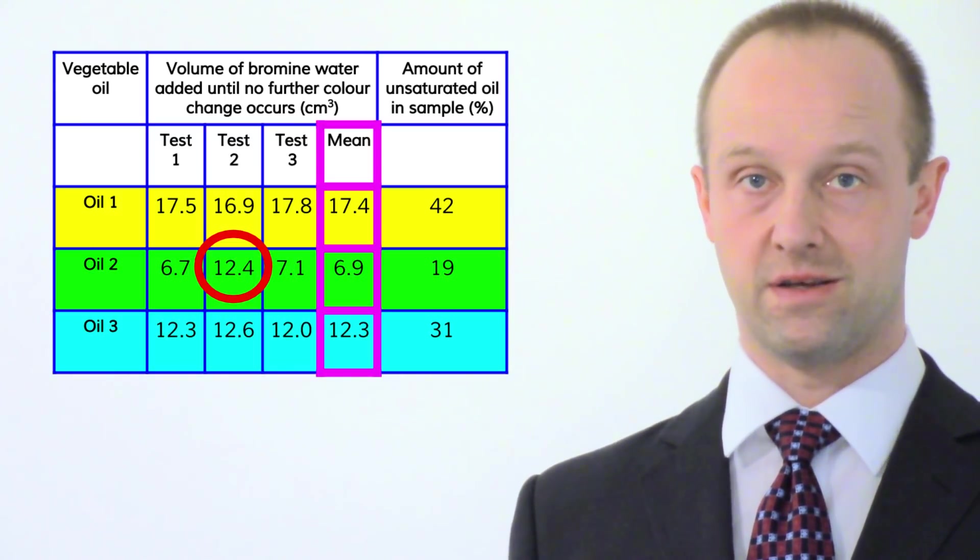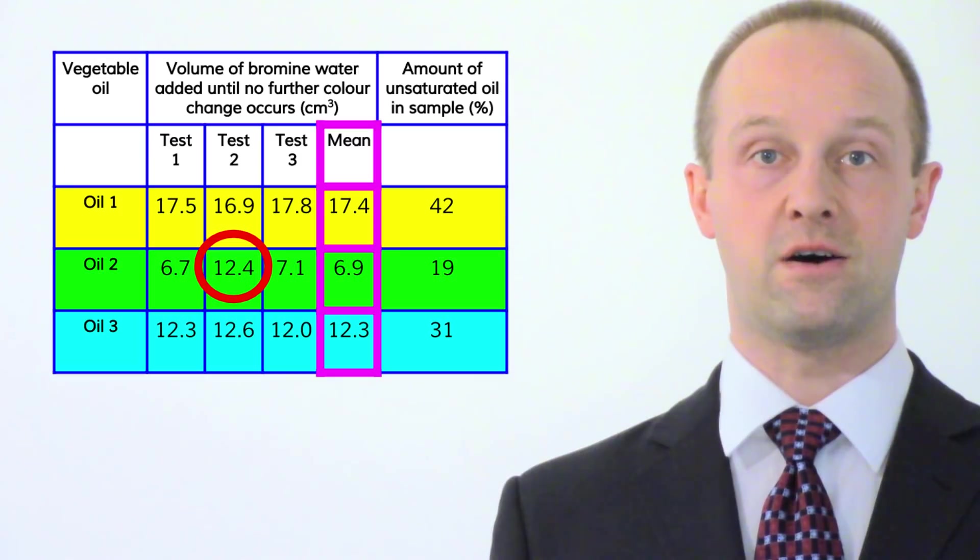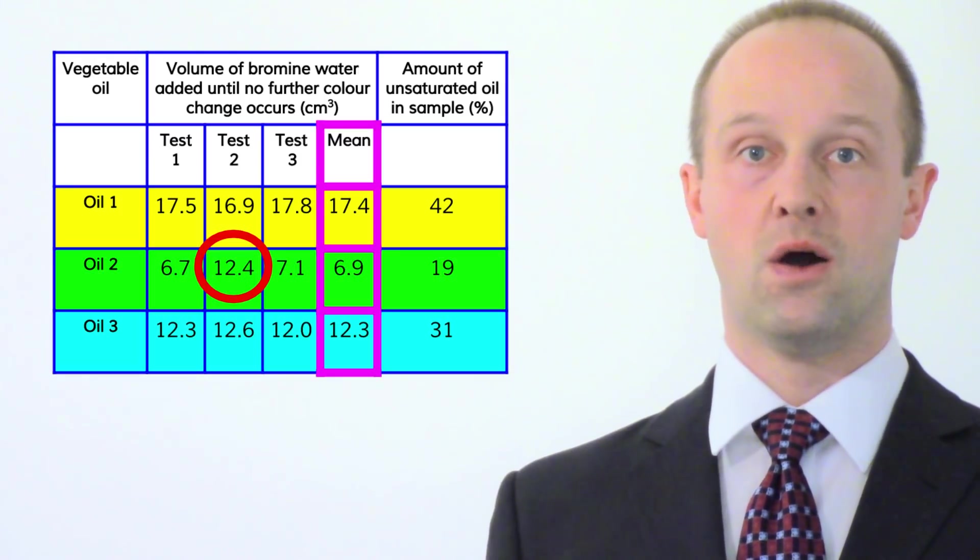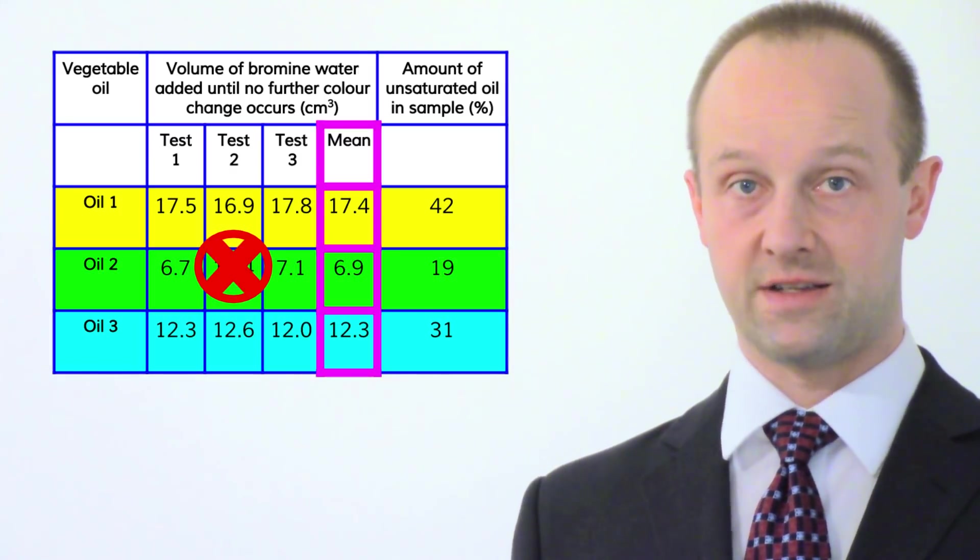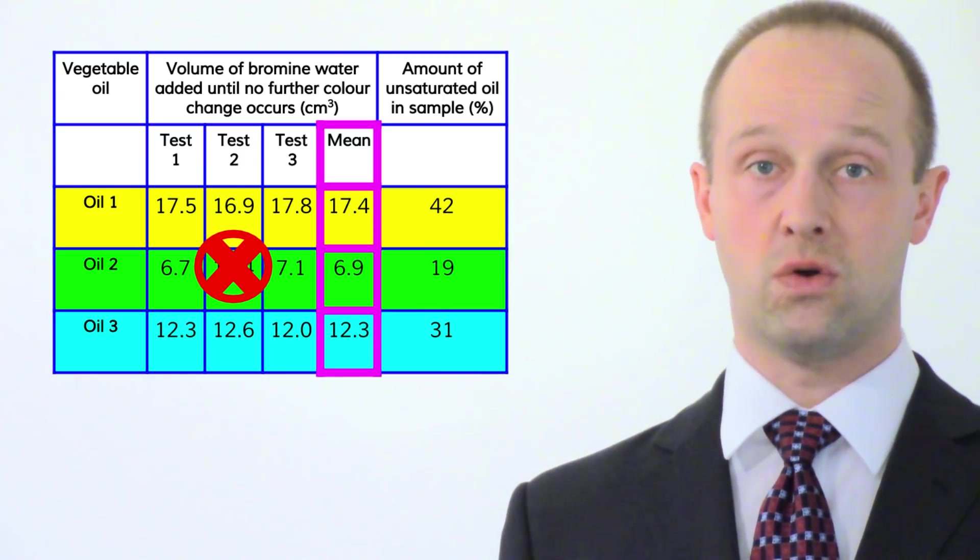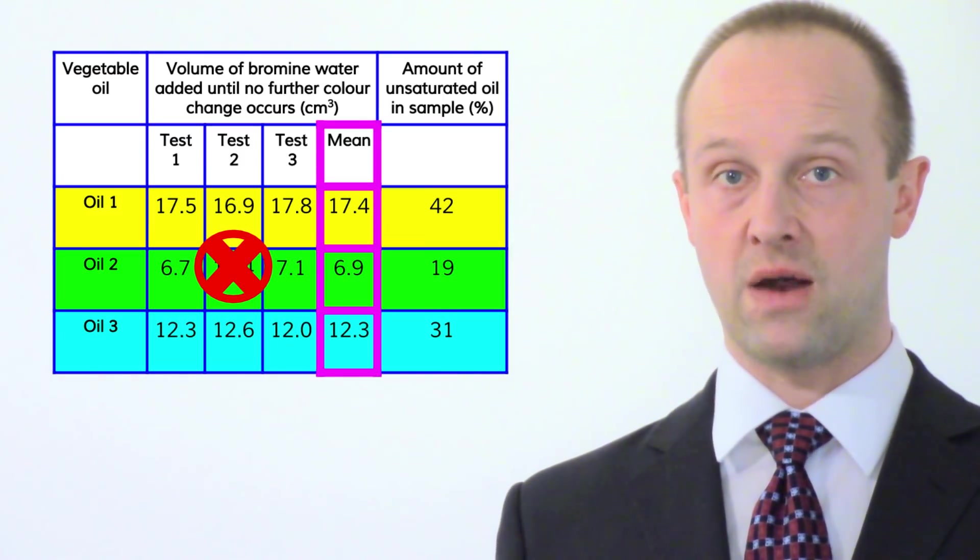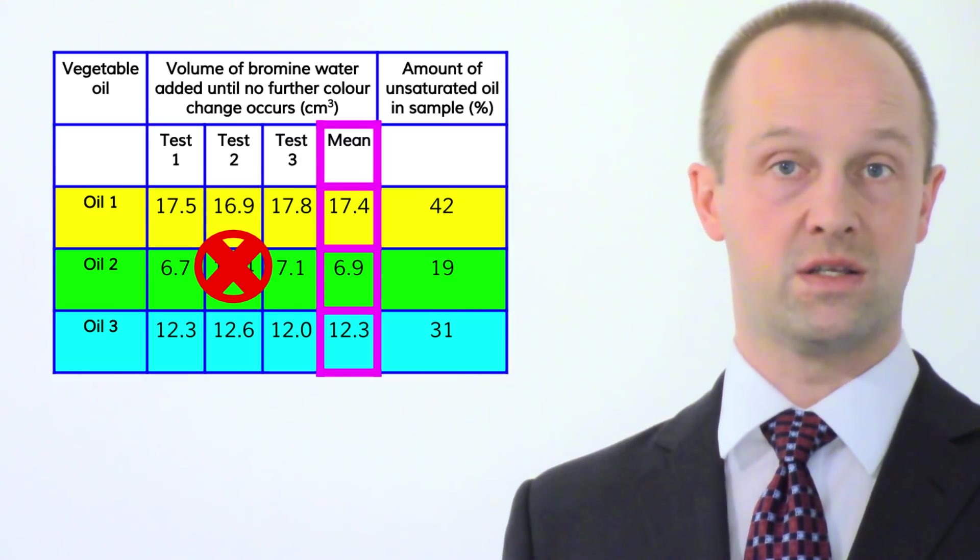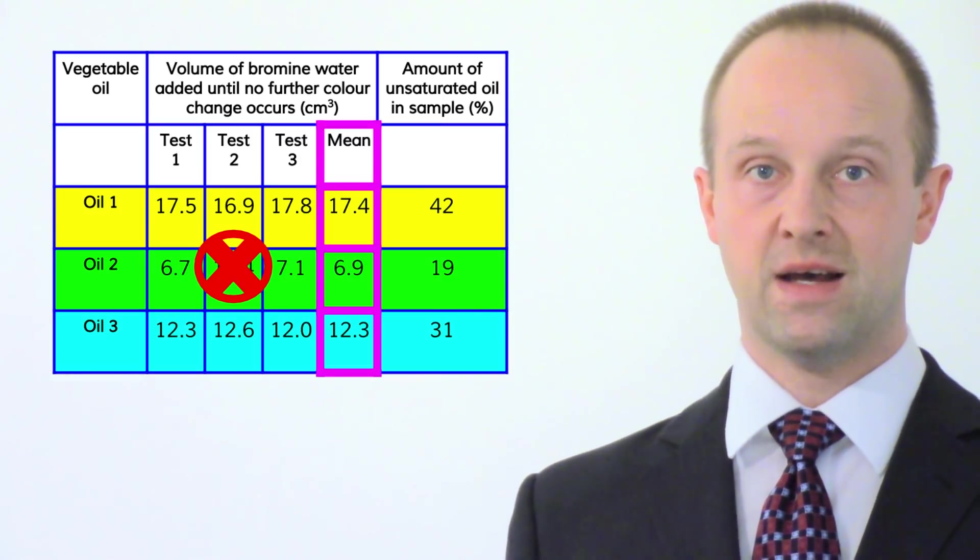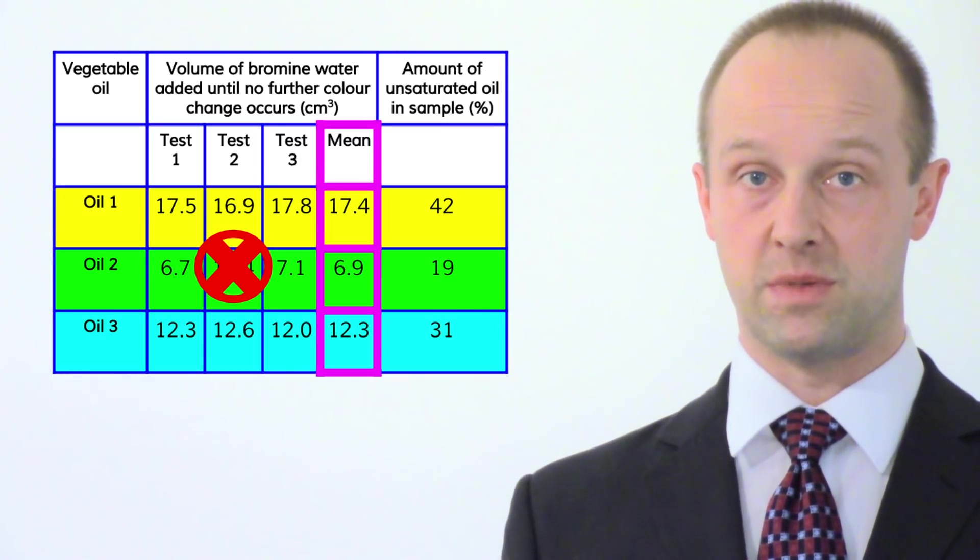The mean for that row is very similar to the other two results. And this is because when working out that mean what we've done is discard that anomalous result. We've ignored it. It's probably down to some sort of error and so we've totally ignored it because it doesn't agree with the others. And so that is clearly the anomalous result.